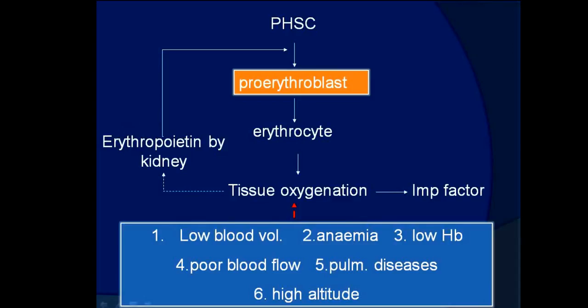Once stimulated, erythropoietin activates the pluripotent hemopoietic stem cell, leading to formation of pro-erythroblasts and subsequently erythrocytes. This process of formation of erythrocytes from the pluripotent hemopoietic stem cell is the erythropoietin phase.